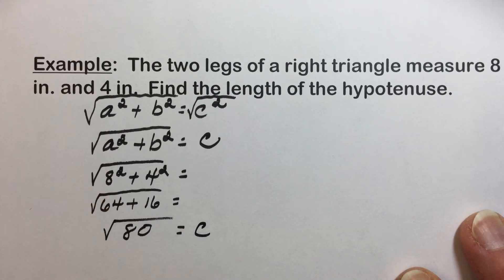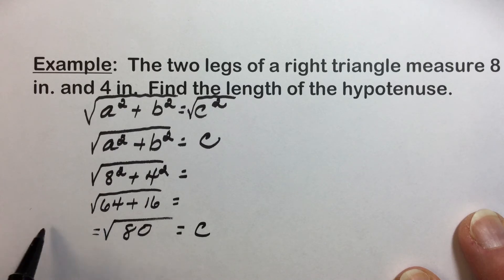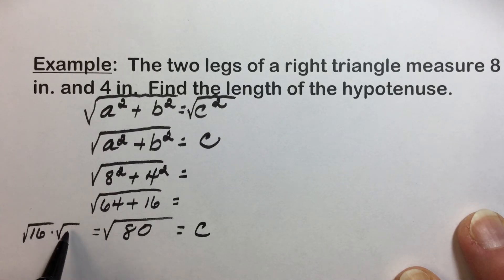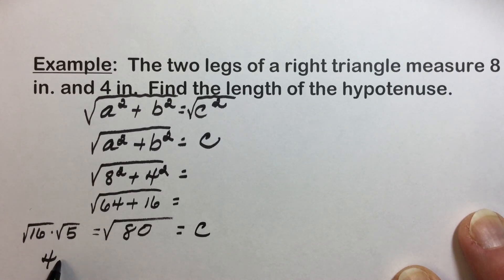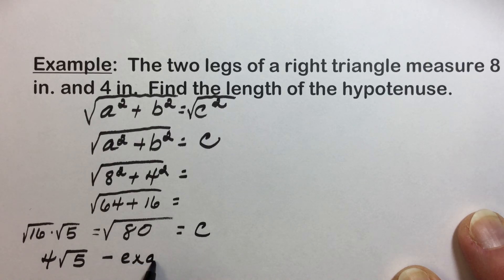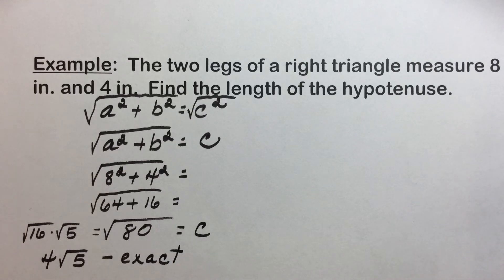If we're asked for an exact answer, we should simplify the radical if possible. 80 breaks down into the square root of 16 times the square root of 5, since 5 times 16 is 80. Simplifying, the square root of 16 is a perfect square, so we get 4 times the square root of 5 as an exact answer.